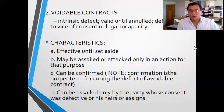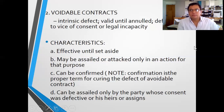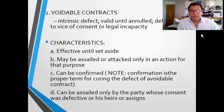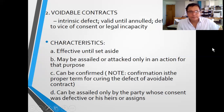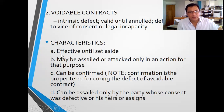The second defective contract is the voidable contract. Voidable contracts are intrinsically defective. They can be annulled, but until annulled, they are valid. The defect is due to vice of consent or legal incapacity. A characteristic is that it is effective — meaning it's still valid until set aside.